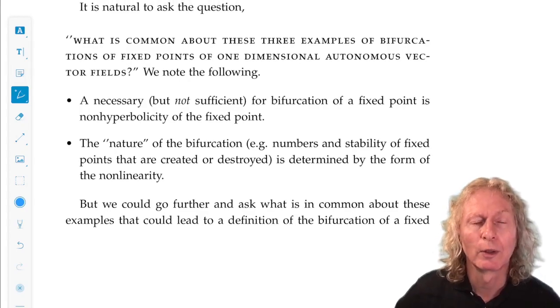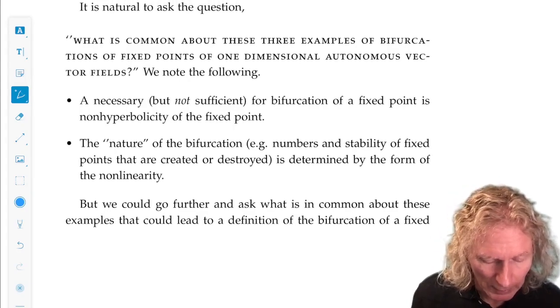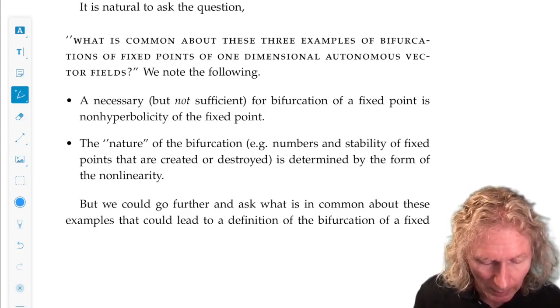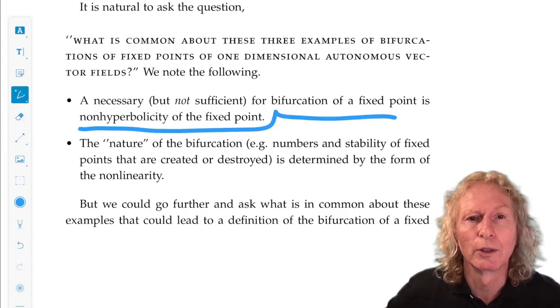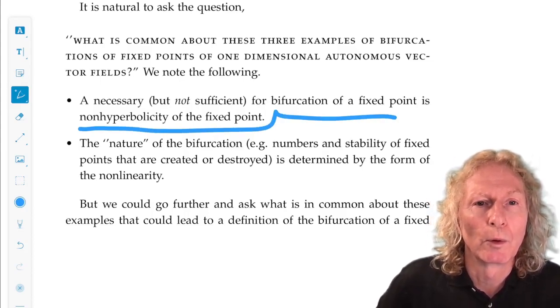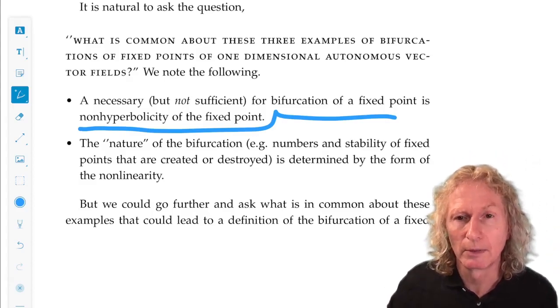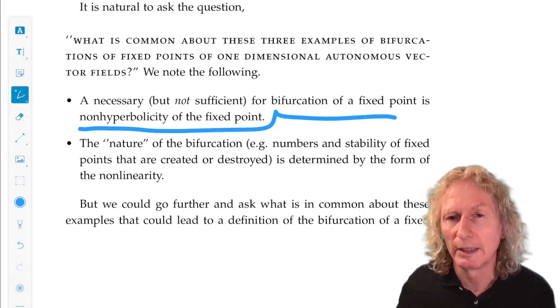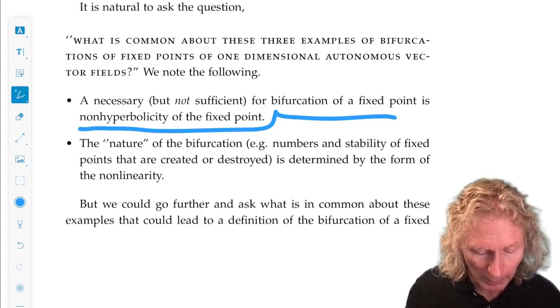In these examples, we have seen that a necessary but not sufficient condition for bifurcation of a fixed point is for the fixed point to be non-hyperbolic. That's a linear condition. So, linear analysis determines whether or not the fixed point can bifurcate.